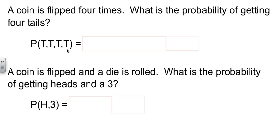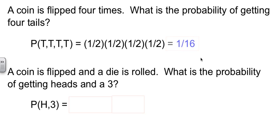This is independent. The coin doesn't remember what it did, so it's just going to be one out of two times one out of two times one out of two times one out of two. And so I get one sixteenth.